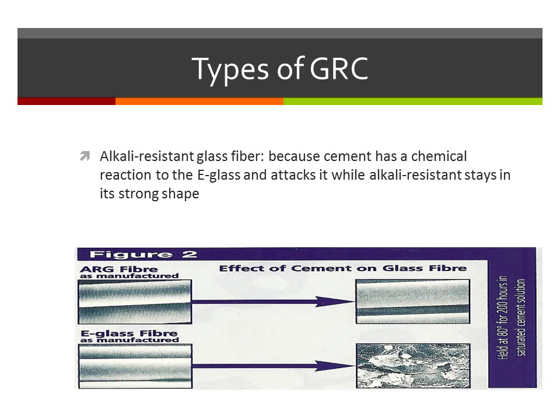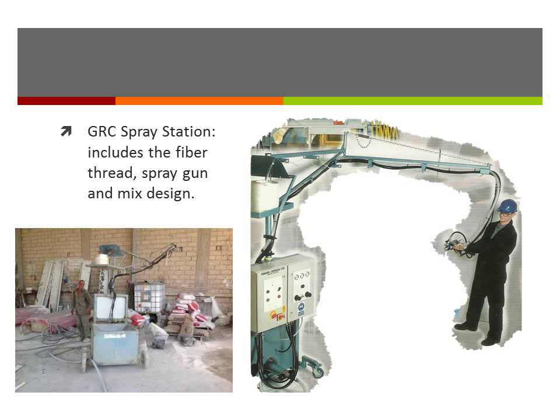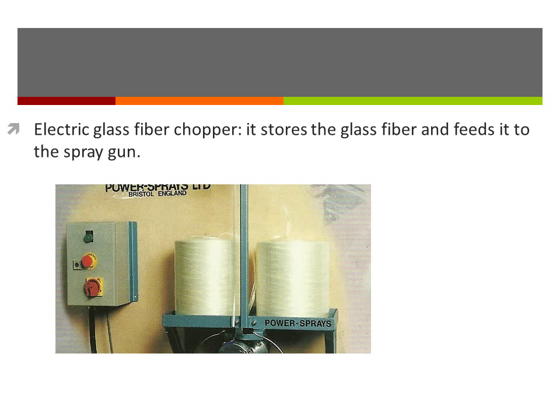The type of glass fiber used is alkaline-resistant glass fiber, because cement has a chemical reaction with E-glass and attacks it, while the alkaline-resistant fiber stays in its strong shape, as shown in the figure. The equipment shown is a concentric GRC spray gun — it simultaneously chops the fiber thread and mixes it with the GRC as the material is being sprayed. The GRC spray station includes the fiber thread, spray gun, and the mix design.